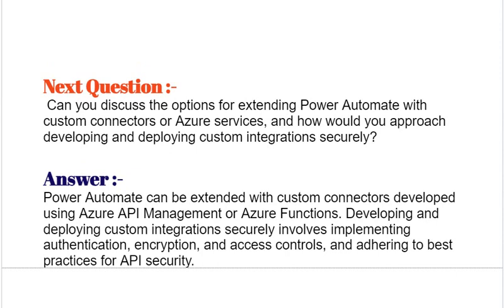Next question: Can you discuss the options for extending Power Automate with custom connectors or Azure services, and how would you approach developing and deploying custom integrations securely? Power Automate can be extended with custom connectors developed using Azure API Management or Azure Functions. Developing and deploying custom integrations securely involves implementing authentication, encryption, and access controls, and adhering to best practices for API security.